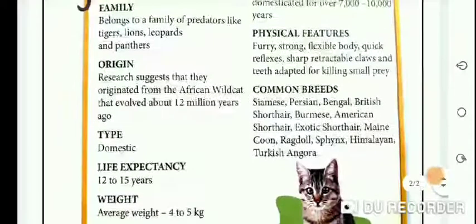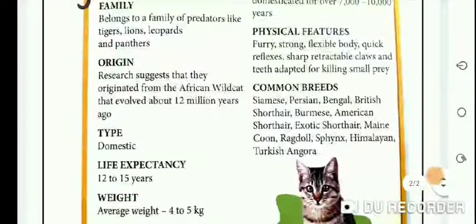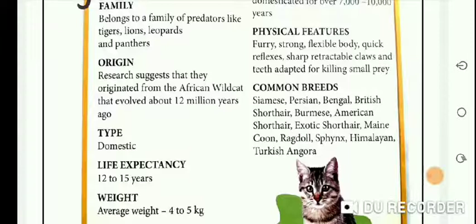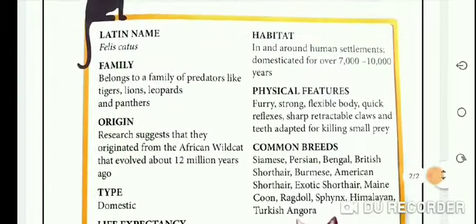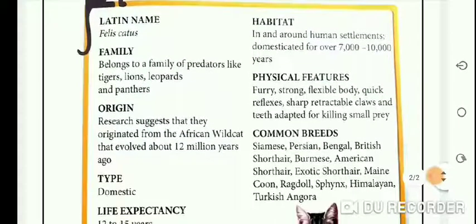Common breeds: Siamese, Persian, Bengal, British Shorthair, Burmese, American Shorthair, Exotic Shorthair, Maine Coon, Ragdoll, Sphinx, Himalayan, Turkish Angora. The information is given in very few words, and the reader understands much about cats. This is a fact file on cats.